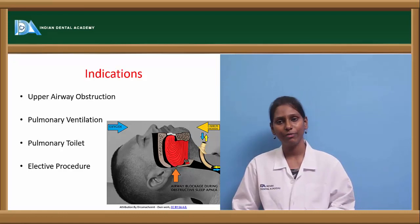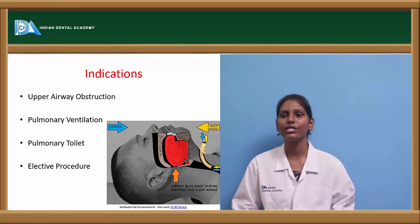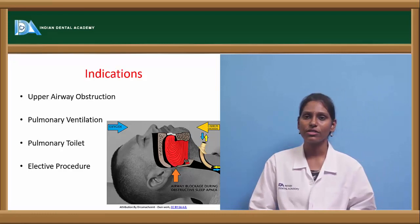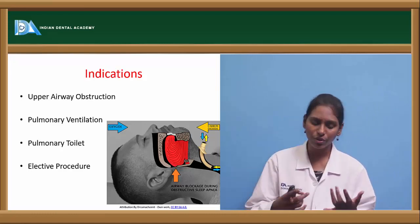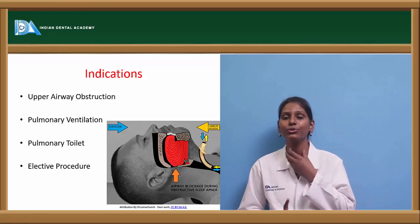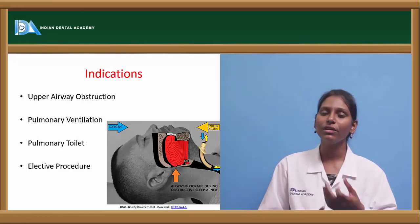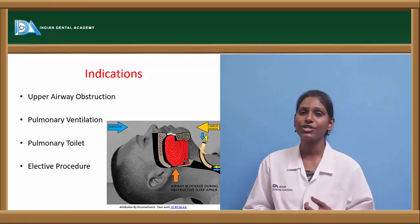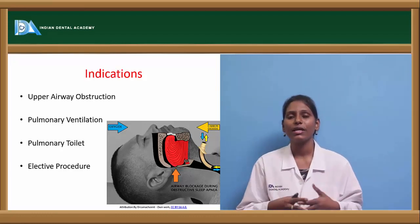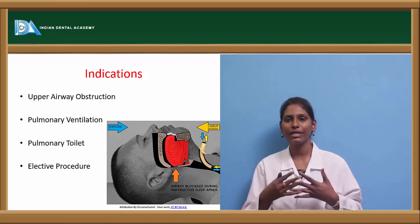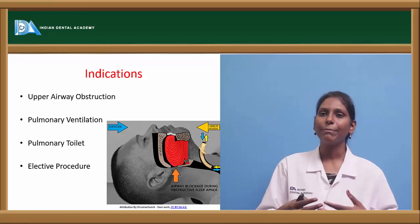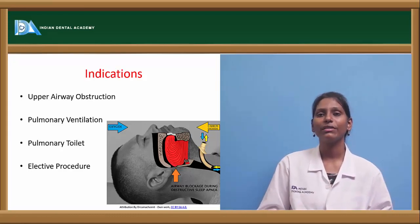Tracheostomy has a wide range of indications: upper airway obstruction, pulmonary ventilation, pulmonary toilet, and elective procedures. Other clinical indications include paralysis of respiratory muscles, large tumors at the laryngeal region, obstruction due to trauma where the patient is unconscious and cannot breathe on their own, and when the ventilation process is hampered.